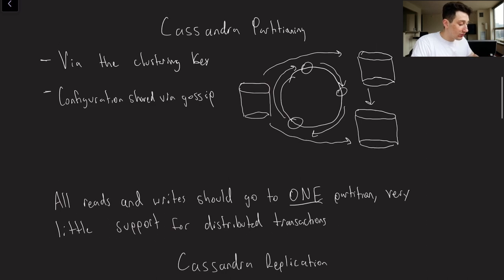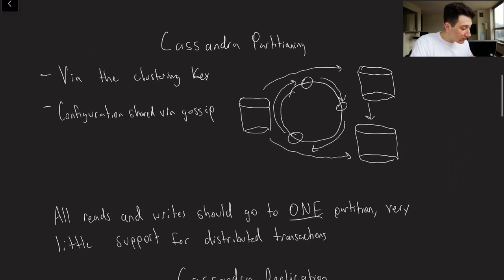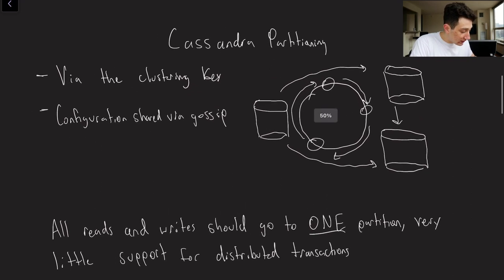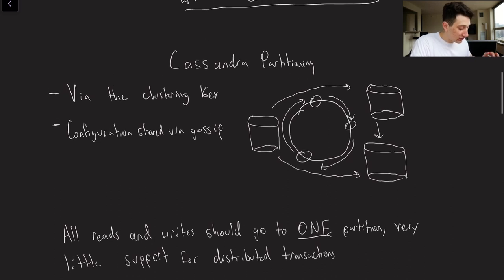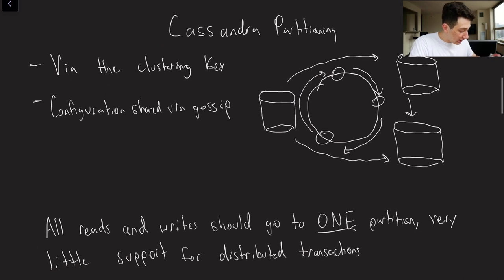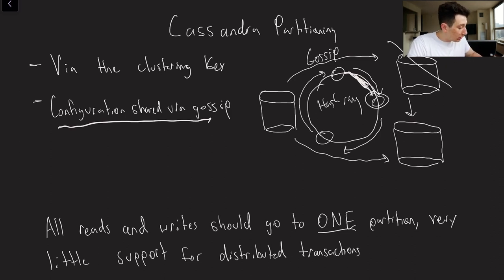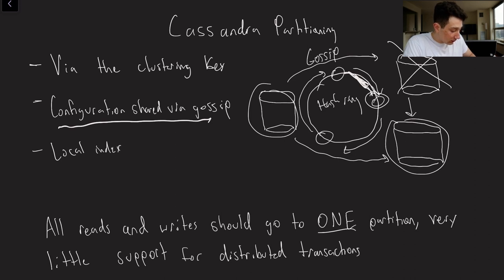First we're going to start by talking about partitioning in Cassandra. If you recall, we've got a cluster key and a sort key, and that is going to do things for us in partitioning. What it basically means is that we are going to decide how we're partitioning each row based on the value of its clustering key. That configuration for partitioning is actually going to be shared via gossip protocol. So every single node can go ahead and just gossip. If you recall from our consistent hashing video, this would be like our hash ring, and this is going to say which keys are going on which node. If a node were to go down, these guys would both start gossiping that to one another, and eventually everyone would agree on the partitioning state of the whole system. And then of course, we've got a local index with a sort key.